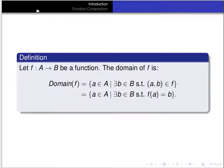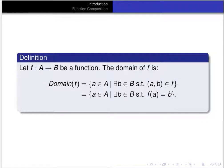If f from A to B is a function, then the domain of f is the collection of all elements a in A such that there exists a b in B so that (a, b) is an element of f. In other words, the domain of f is the subset of A consisting of all values from A which the function f assigns a value in B.